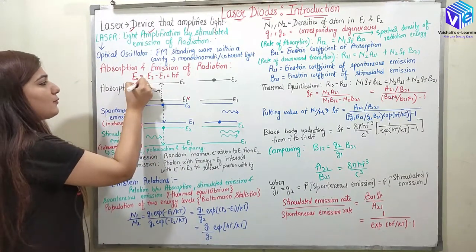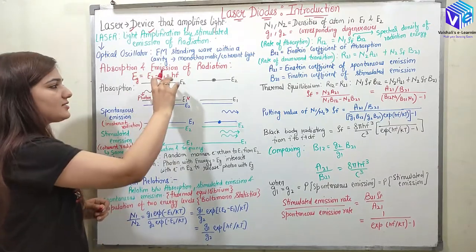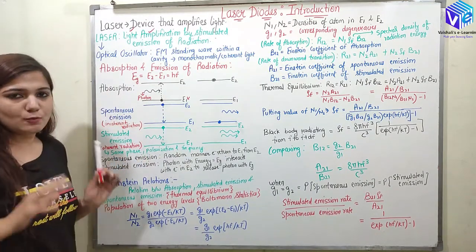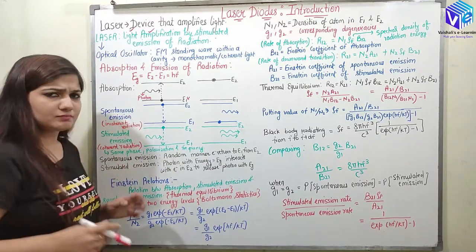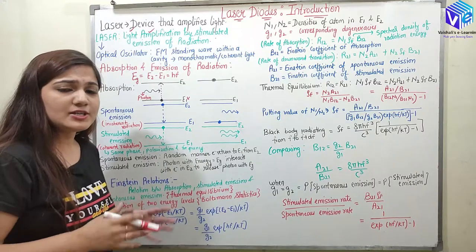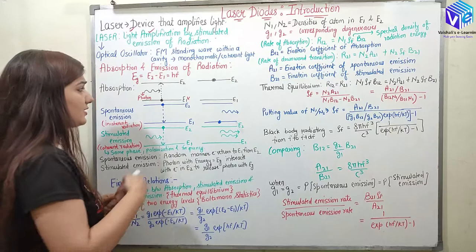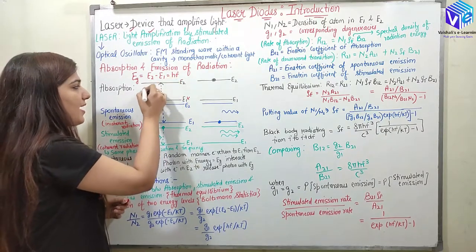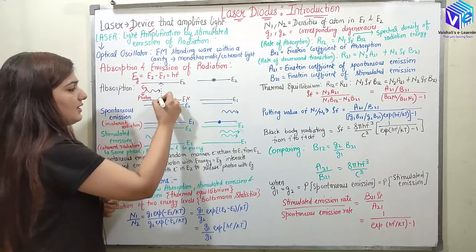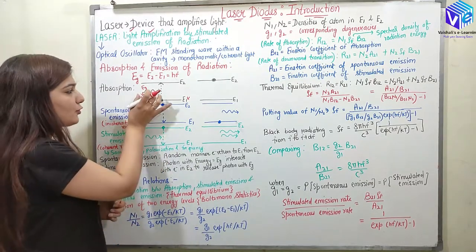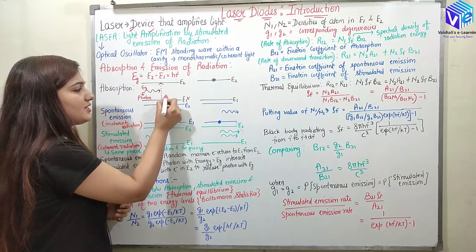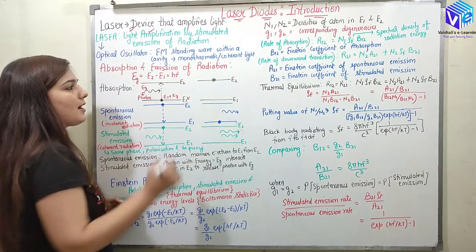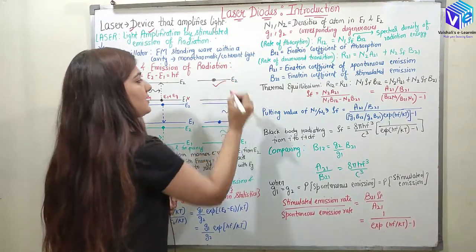So I can say EG will be equal to E2 minus E1. This EG is the band gap energy which is equal to E2 minus E1, which is equal to HF. In absorption, we are providing a photon. A photon carries light energy — it is a light particle carrying some energy. The photon will have frequency F when it carries energy HF, so the photon will have energy EG. When it falls on the electron in the lower energy state, the photon excites the electron. The electron will have energy E1 plus EG, which equals E2, so it moves to the upper energy state. This process is called absorption.